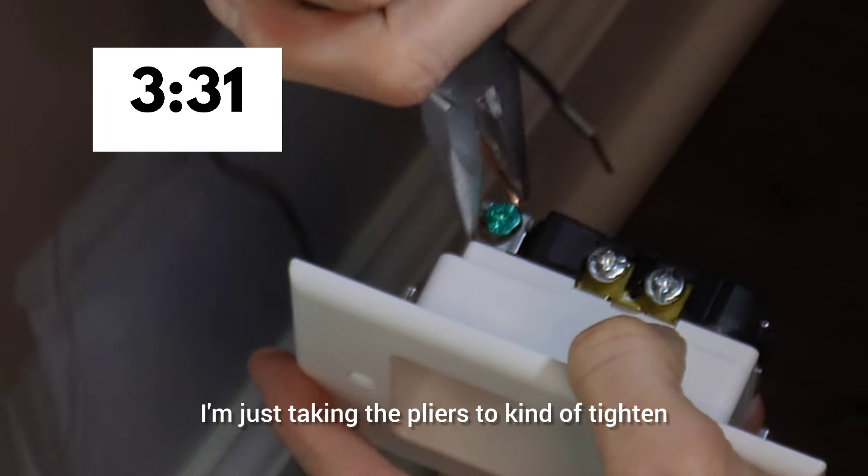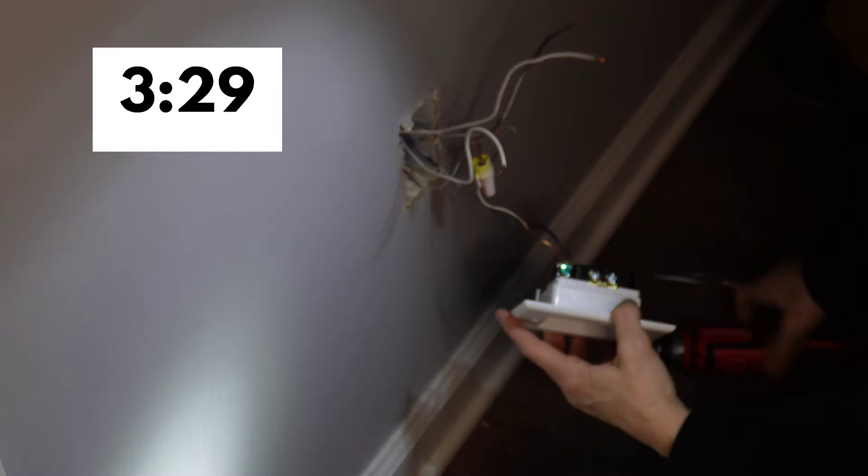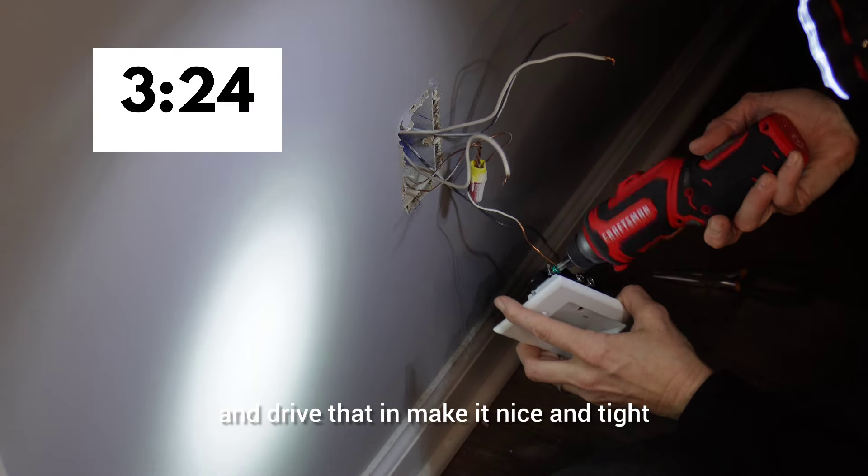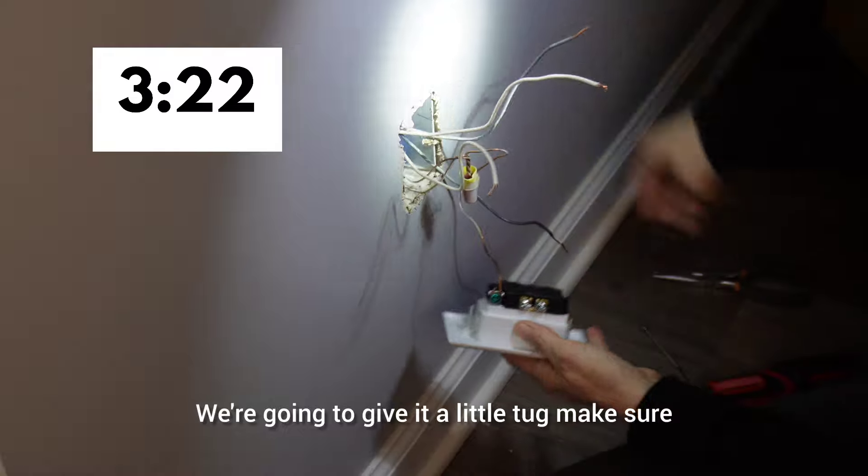I'm just taking the pliers to kind of tighten the loop around the screw. And then I'll take my screwdriver and drive that in, make it nice and tight. We're going to give it a little tug, make sure that it's connected well.